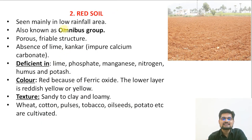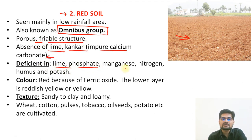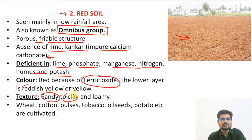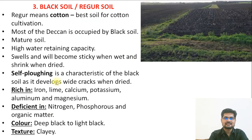The second type is red soil, seen mainly in low rainfall areas and also known as the omnibus group. It has a porous and friable structure and is deficient in lime, phosphate, manganese, nitrogen, humus, and potash. Its color is red because of iron oxide. Texture ranges from sandy to clay to loamy, and crops grown include wheat, cotton, pulses, tobacco, oilseeds, and potato.